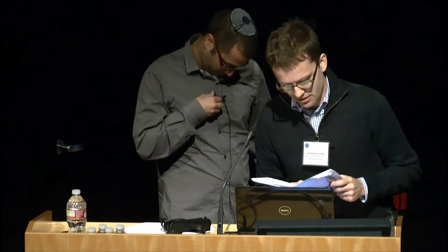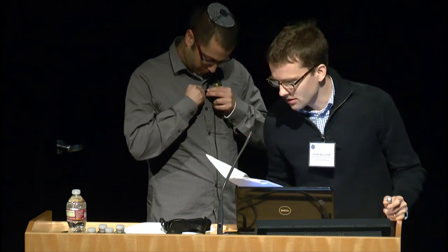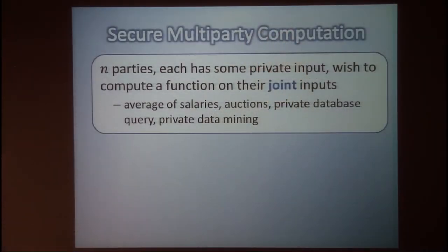Let's start the next session — the first of two sessions on secure computation. The first talk is a paper by Gilad Asharov: 'Towards Characterizing Complete Fairness in Secure Two-Party Computation.' In secure multi-party computation, we have some set of parties, each with a private input, and the parties wish to compute some joint function of their inputs. For instance, we can look at average of salaries — each party has a salary and we want to compute the average.